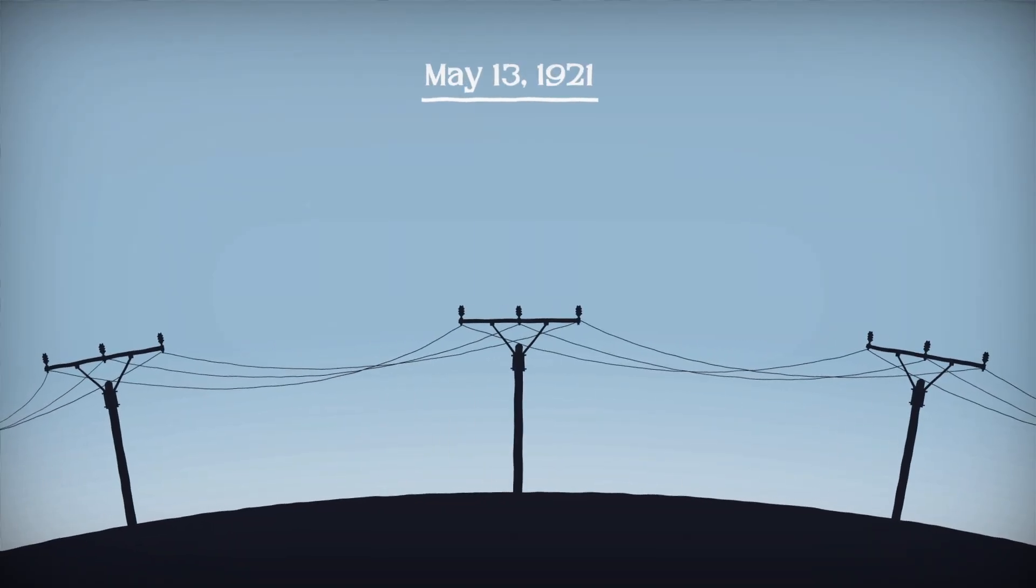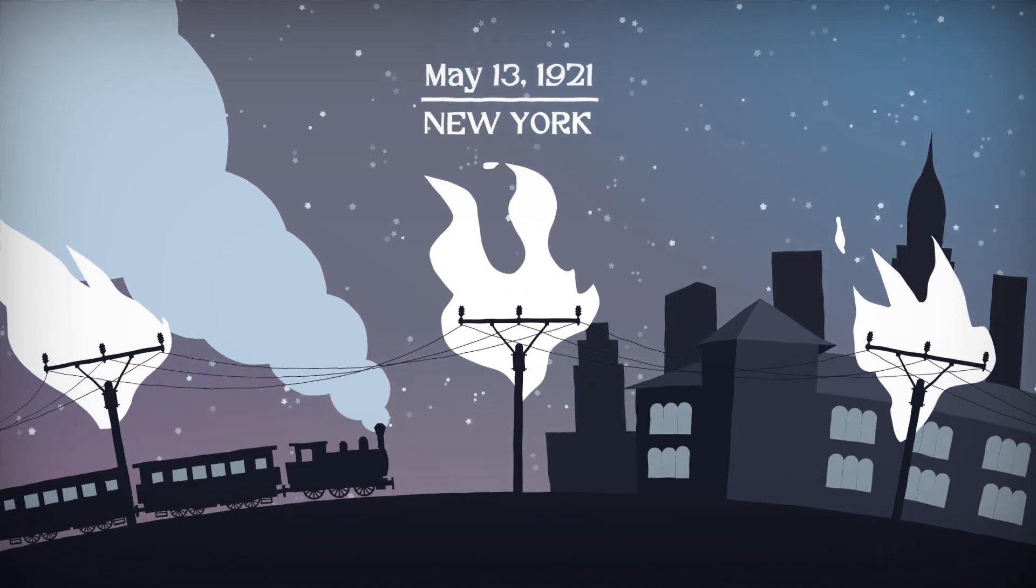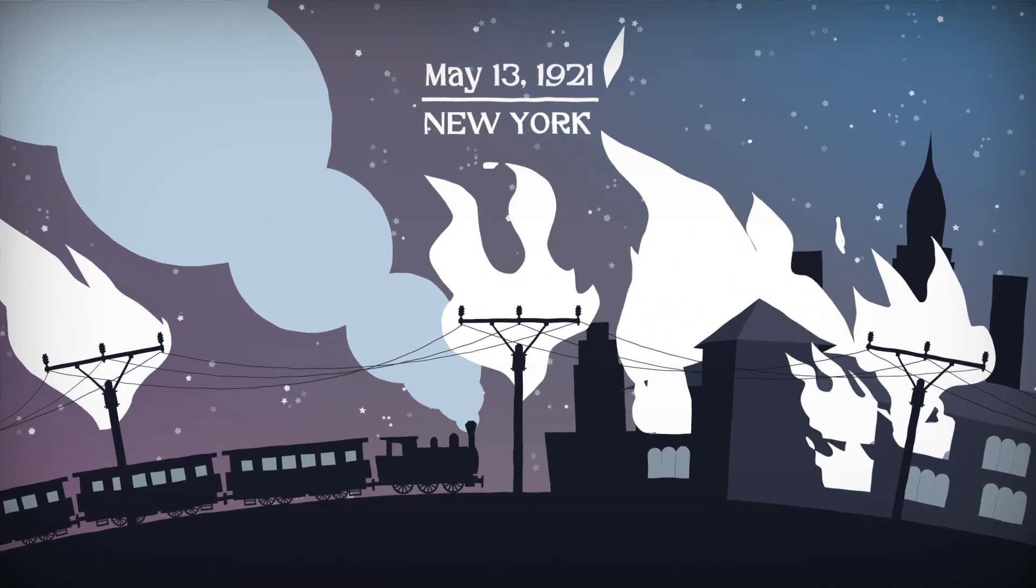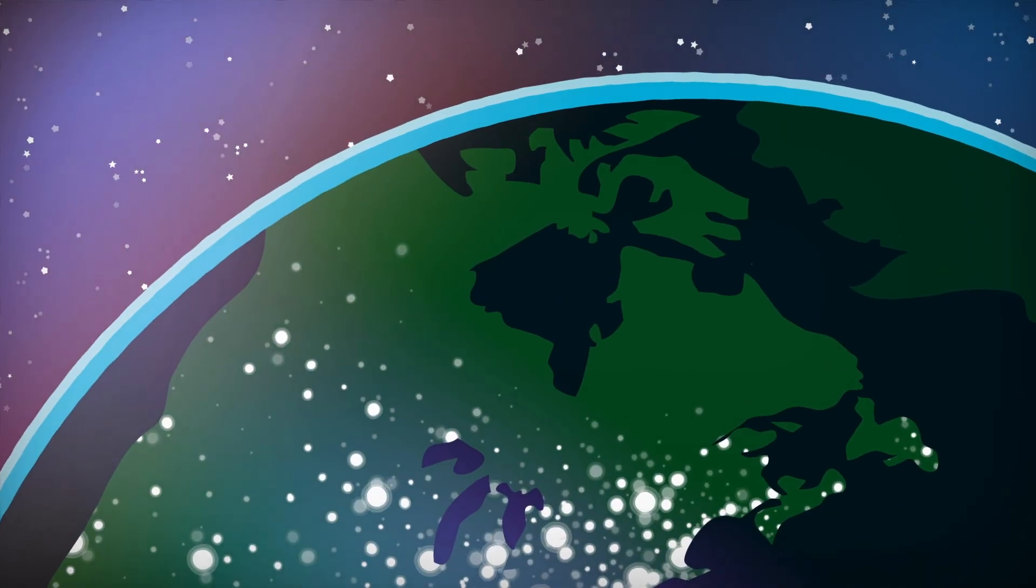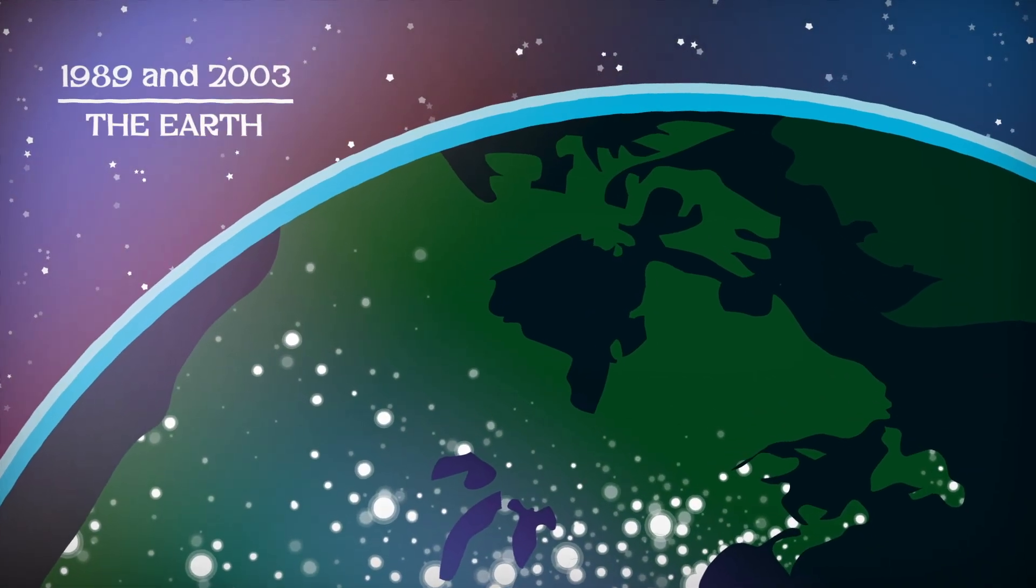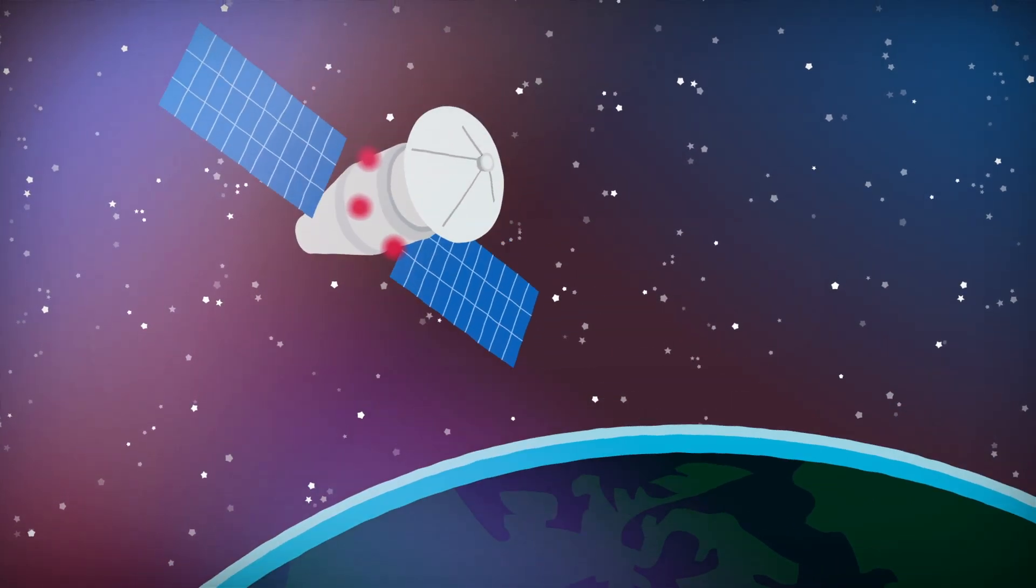In 1921, another powerful solar storm caused telephones and telegraph equipment around the globe to combust. In New York, the entire railway system was shut down and fires broke out in the central control building. Comparatively weak storms in 1989 and 2003 turned off regions of the Canadian power grid and damaged multiple satellites.